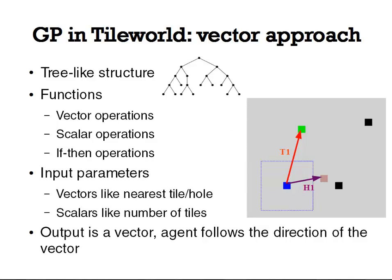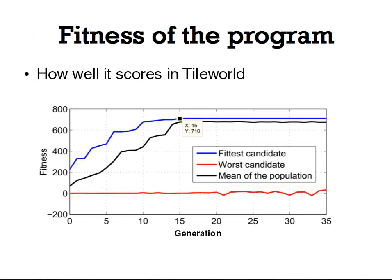The output of the program is a vector. In each step, the agent moves in the direction of that vector. To get the fitness of the program, we run Tile World with agents using the program. The fitness is the average of total scores the agents were able to achieve. This figure shows one evolution run in environment number two. The size of the population was 500. You can see that the fitness of the elite rockets up in only several generations and then levels off.